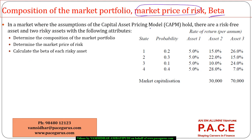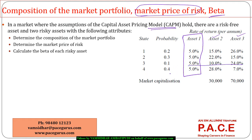In a market where the assumptions of CAPM are holding, there is a risk-free asset — asset one — and there are two risky assets, asset two and asset three. They have the following attributes: a probability of 20% for one set of returns, 30% for another, 10% for another, and 40% chance for the last set of returns.